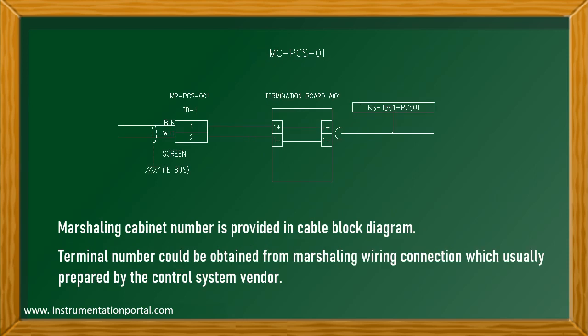This is the marshaling cabinet section. Marshaling cabinet number is provided in cable block diagram. Terminal number could be obtained from marshaling wiring connection, which is usually prepared by the control system vendor. In addition, if termination board or field terminal assembly is used, the information also shall come from control system vendor.